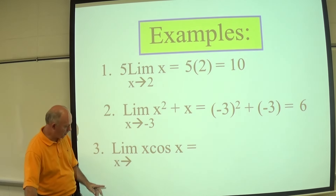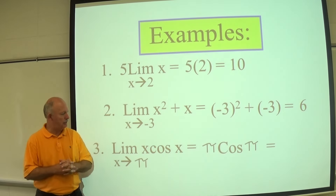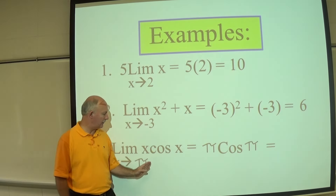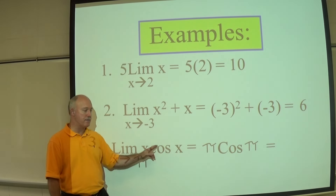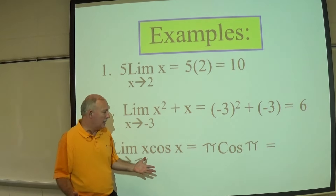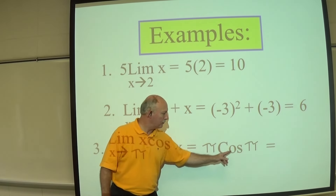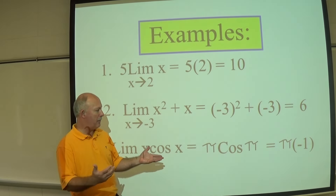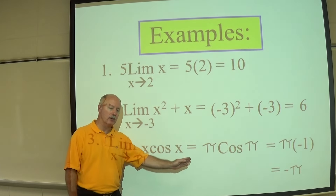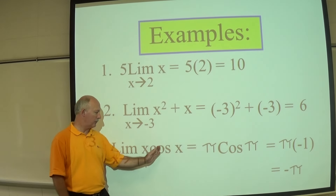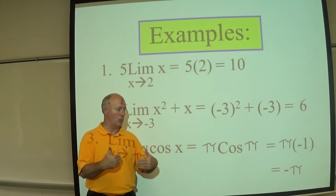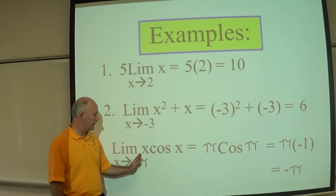The limit as X approaches pi of X times cosine X: substitute pi in for X, giving pi times cosine pi. Cosine pi is negative one, so we have pi times negative one, which equals negative pi. This is the product property — find the limit of each factor and multiply them together.